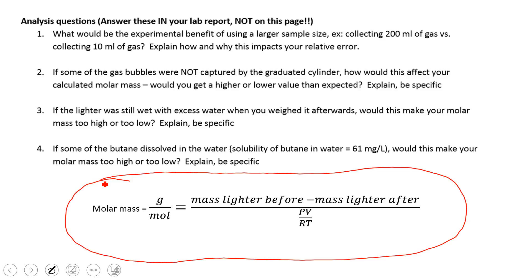And when you're thinking about error, like questions like number three here, if the lighter was still wet with excess water when you weighed it afterwards, what would this do to your molar mass? So if you're presented with a scenario like this, you want to ask yourself, which value would this thing affect? Would it affect my mass value, my pressure value, my volume value, my temperature value?